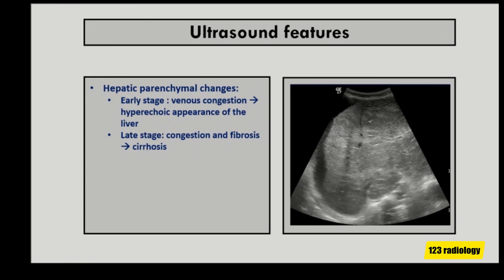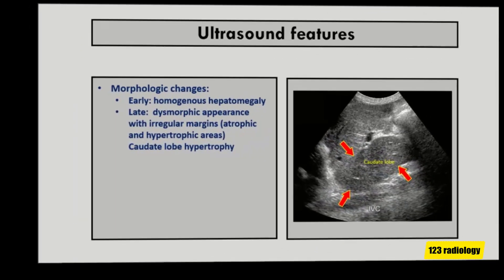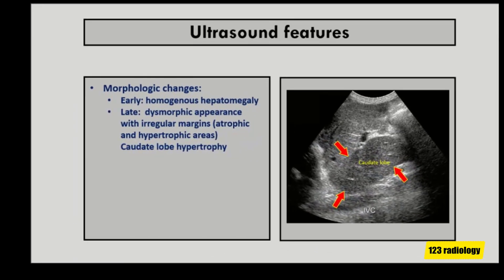During the early stage of the disease, venous congestion is evident, resulting in a hyperechoic appearance of the liver on ultrasound. Later on, in the chronic stage of the disease, in addition to hepatic congestion, fibrosis is present, leading to cirrhosis.